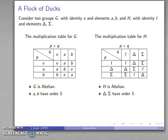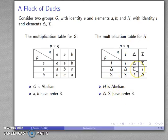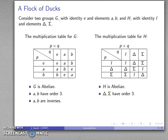Looking at the corresponding elements of group H, delta and sigma likewise have order three. Delta times delta is sigma. Delta times delta times delta — that's sigma times delta — gives the identity. So both of these have order three as well.